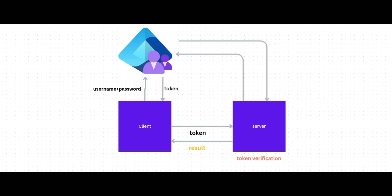The best part is this all happens very quickly, almost instantly. In modern web applications, we don't need to manually build these complex flows from scratch. SDKs and libraries are available that make integrating an identity provider like Azure AD into your application very smooth. In simple terms, an identity provider is a trusted authority that verifies your identity and issues tokens, so your application doesn't need to handle sensitive login details directly.